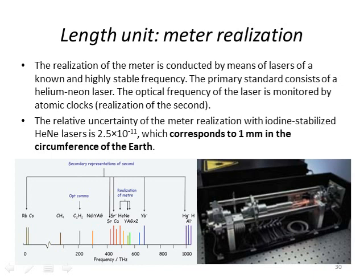The length unit is also realized using the time standard. The primary standard consists of a helium-neon laser, and the optical frequency is monitored by atomic clocks used for the realization of the second. It has a relative uncertainty of 2.5×10⁻¹¹, which corresponds to one millimeter uncertainty with respect to the circumference of the earth. That's the precision of the meter standard.